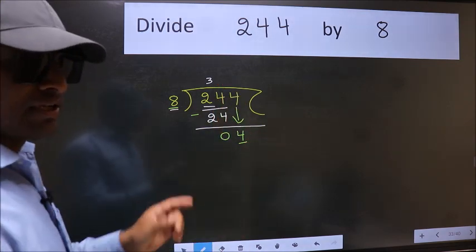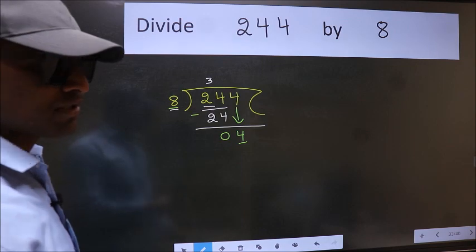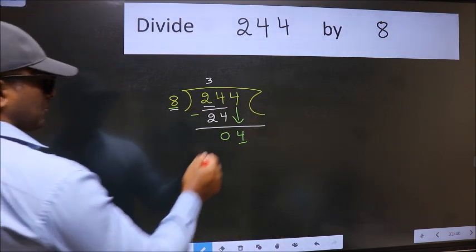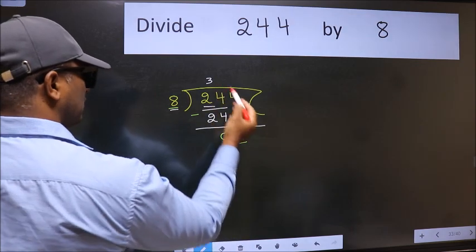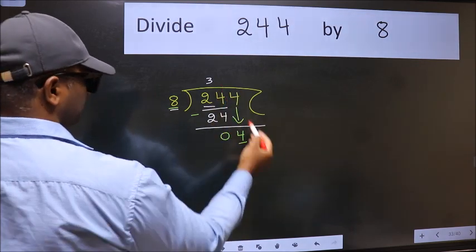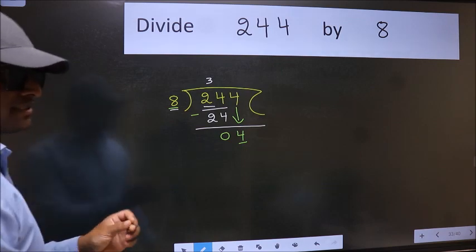Which is wrong. Why is it wrong? Because just now you brought this number down, and in the same step, you want to put dot, take 0. Which is wrong.